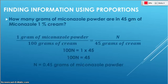Next problem. How many grams of miconazole powder are in 45 grams of a 1% cream? Again, write that percent right away. 1% means 1 over 100. We want to know how much is in 45. Setting it up with those labels puts everything in the right place right away.